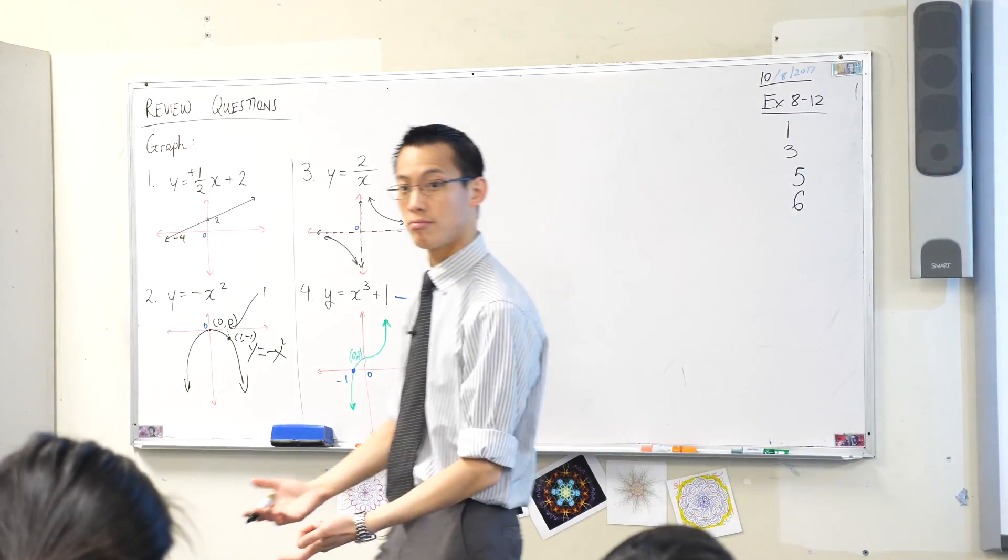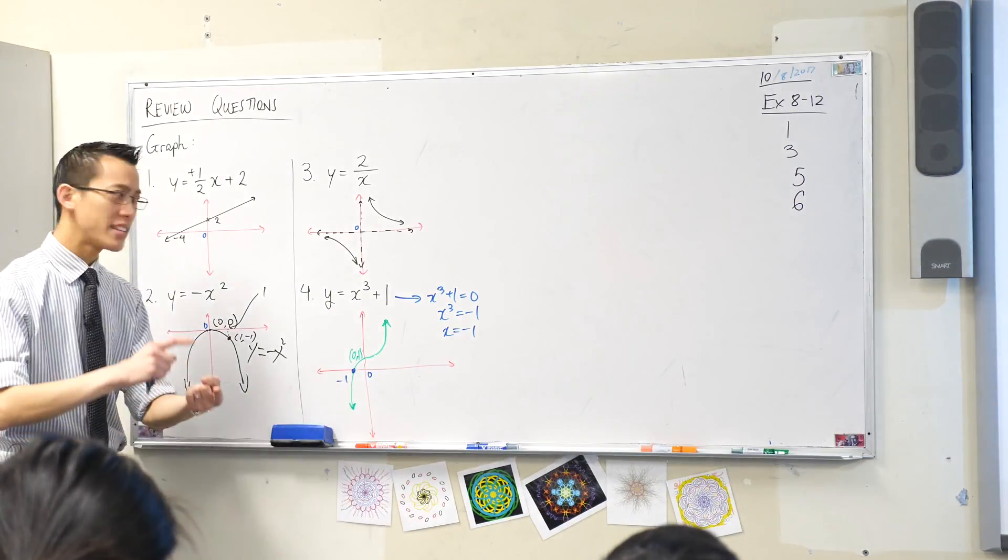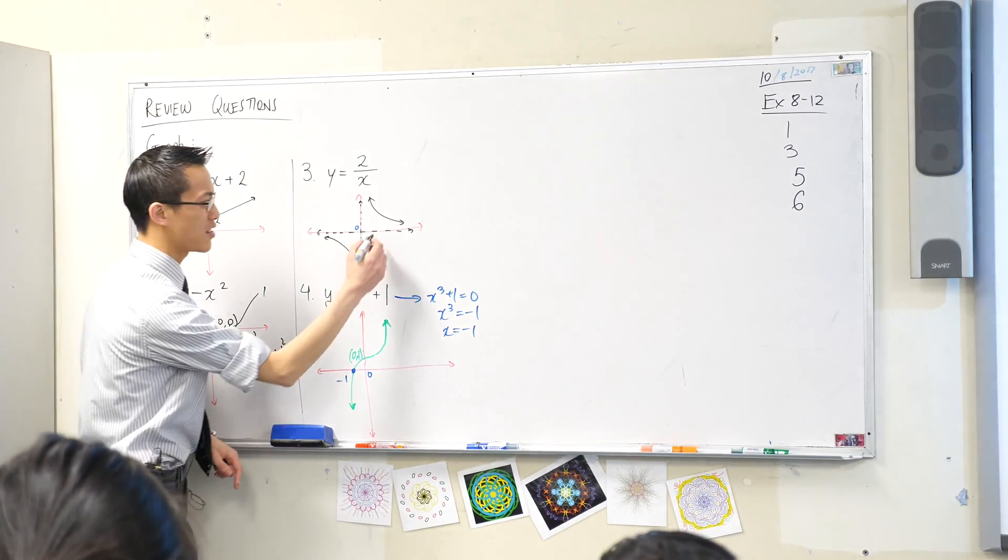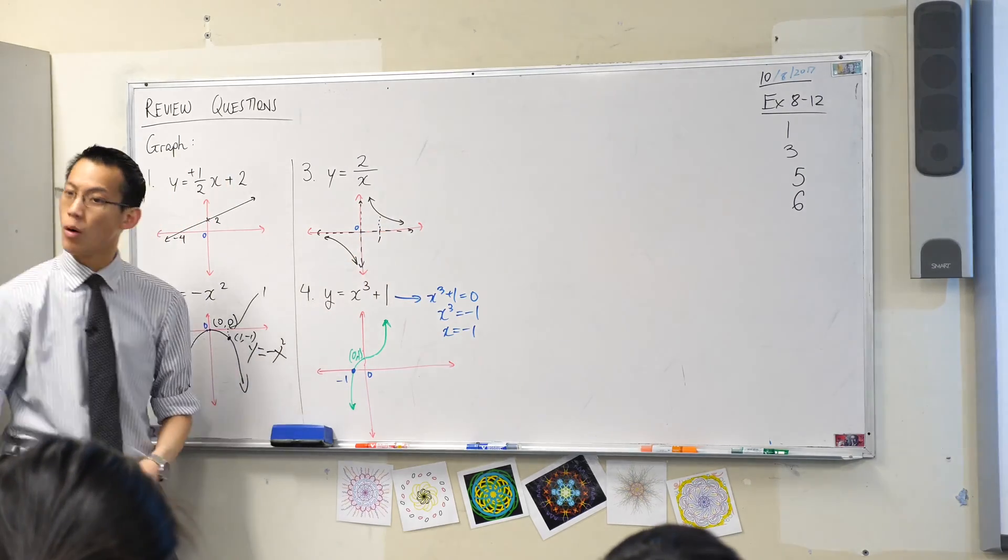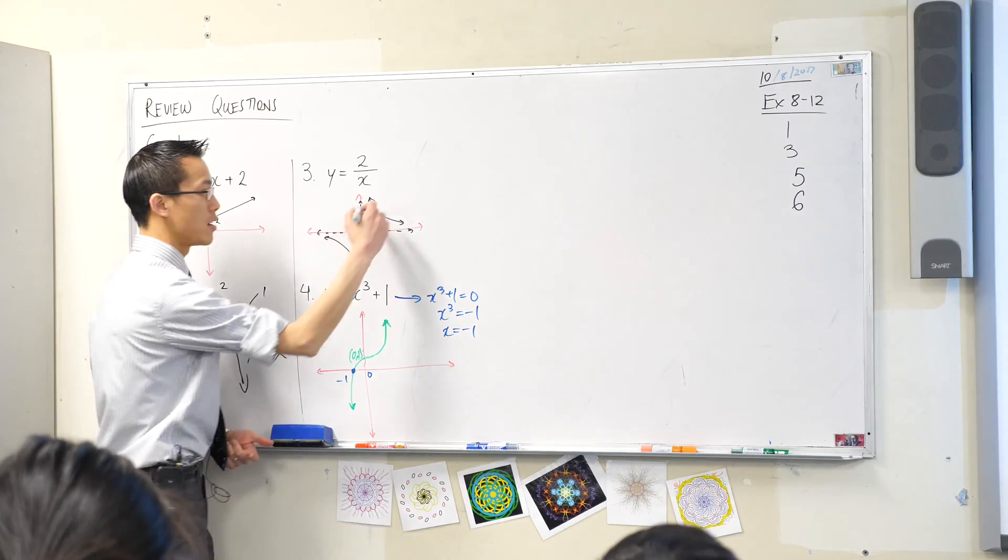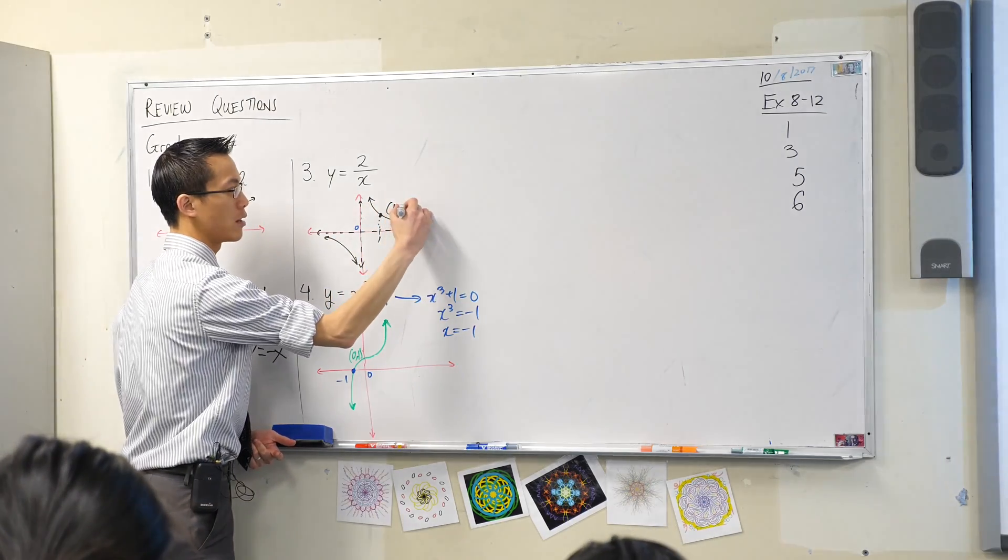Give me an x value. How about x equals 1? x equals 1 is always a really easy number to play with, because it's so easy to calculate. So if I just say that point there, let's call that 1, what will y equal? 2 over 1 is just 2. So I label that spot, and I say 1, 2.